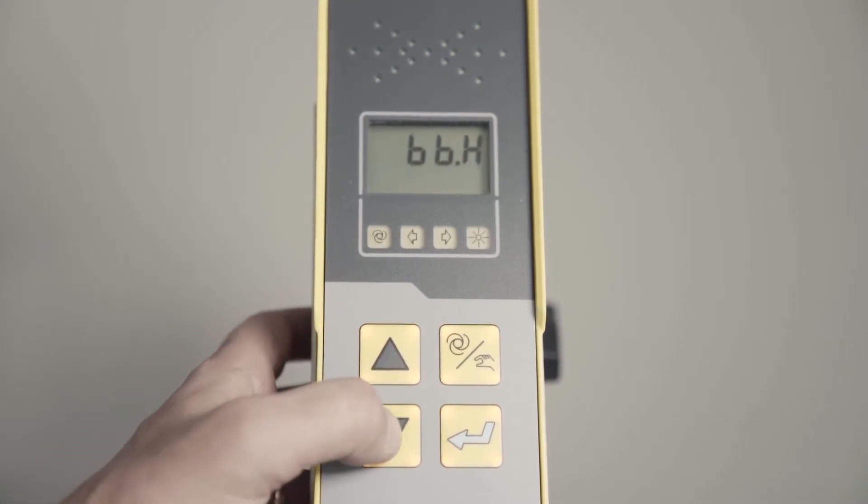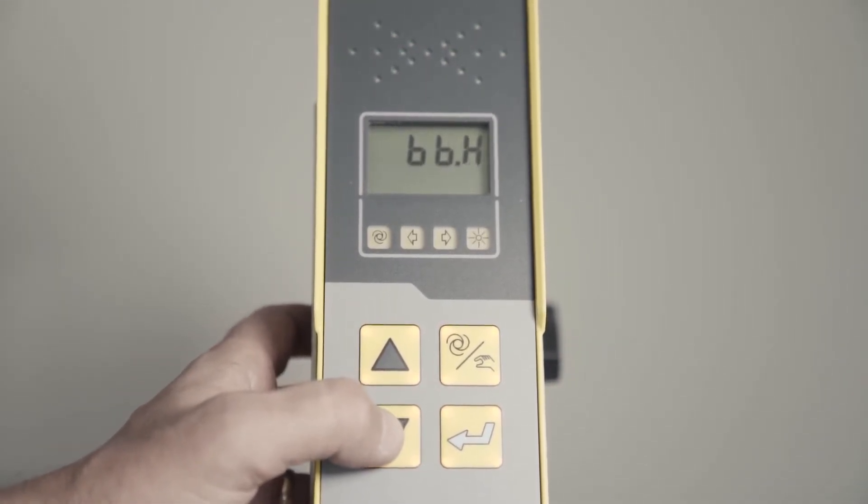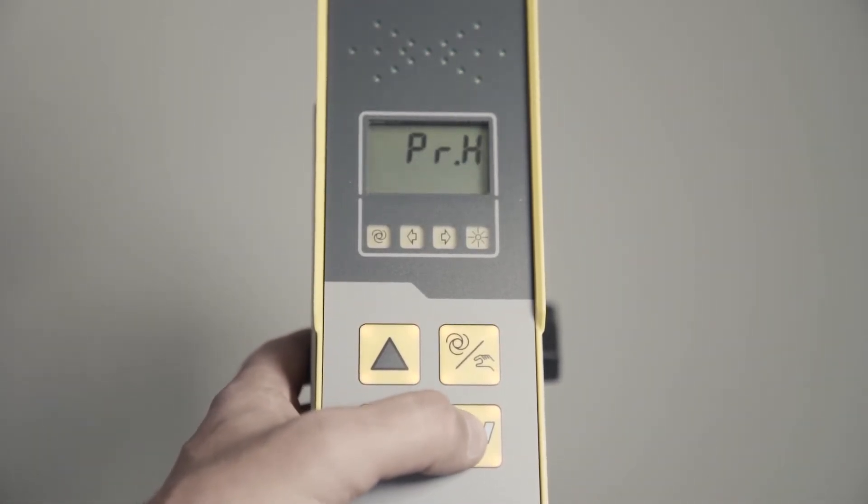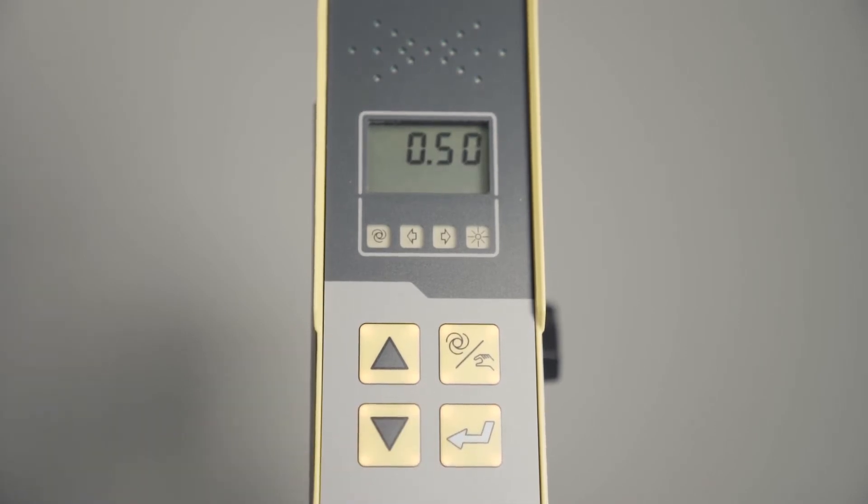It can be PRH which is proportional, BB.H with bang-bang high, BB.L for bang-bang low. Select what you want. We're going to go with proportional. Hit the SET button to go to the next menu.